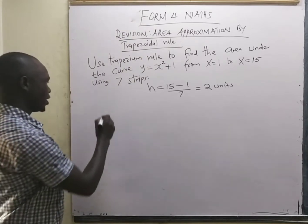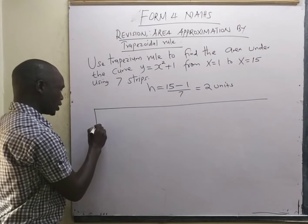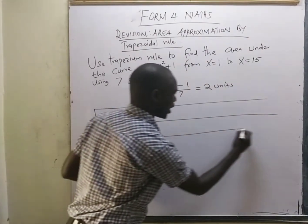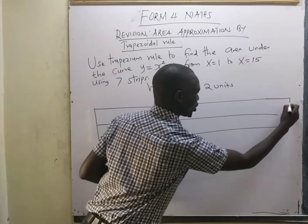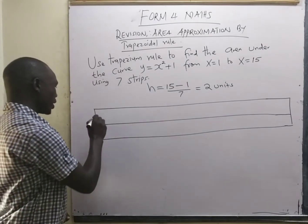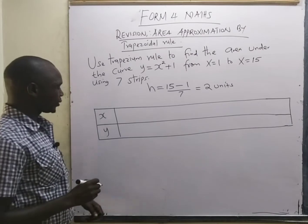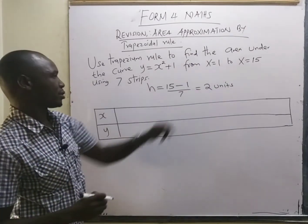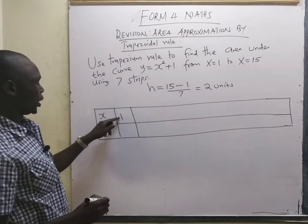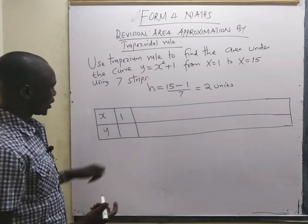From there, you develop a table having 2 rows — one row for the values of x and one for the values of y, which represent the width under the trapezium rule. We begin with the minimum value of x, then keep adding the height to get the next strip.